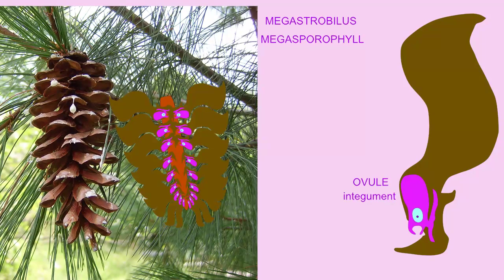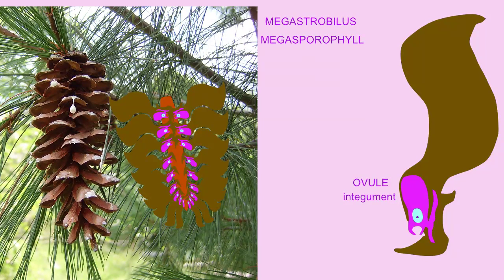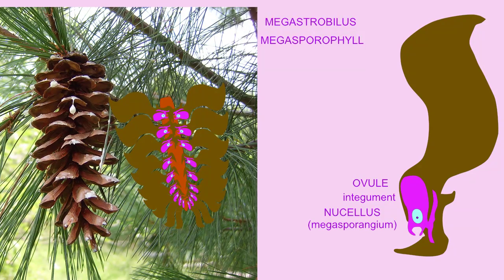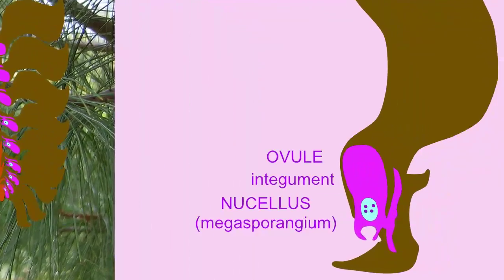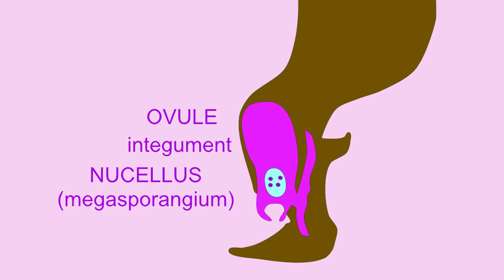Inside the ovule, a megasporangium, known as the nucellus, produces a megaspore mother cell, which undergoes meiosis. Three of the four megaspores degenerate, leaving one, which will then undergo mitosis.